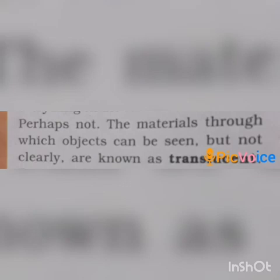This type of material is known as translucent material. The materials through which objects can be seen, but not clearly, are known as translucent.